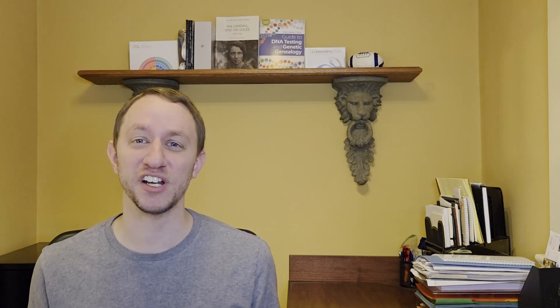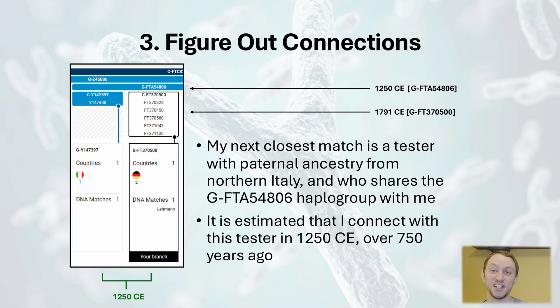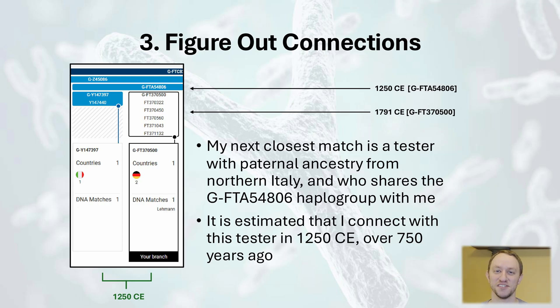Step 3: Figure out connections. Once you date your upstream haplogroups, you can determine when you connect to your matches on the Big Y tree. For instance, my next closest match, whose paternal line is from Northern Italy, shares the GFTA54806 mutation with me that dates to 1250 CE. This means that I share a common paternal line ancestor with this tester from approximately 750 years ago. This result makes sense intuitively, because between 1250 CE and my terminal haplogroup of 1791 CE, 6 different mutations emerged. Remember, one mutation typically arises every 50 to 150 years, and so hundreds of years must have passed for the 6 different mutations to have emerged in my own line.